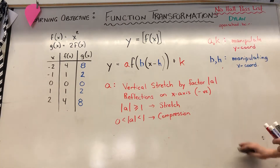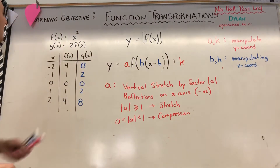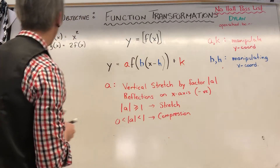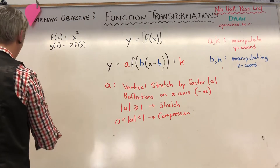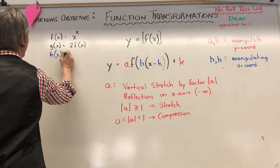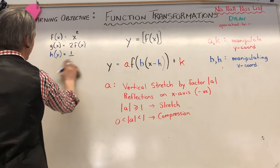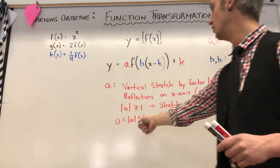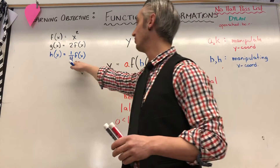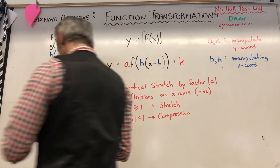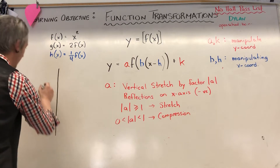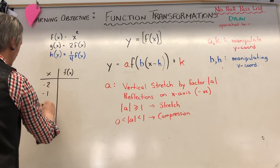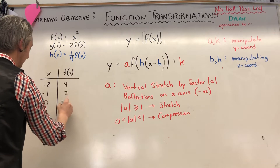Now let's do another example. I'm going to have a new function h(x) = (1/4)f(x). Now a is a fraction between 0 and 1, so I know I'm going to be compressing by a factor of 1/4. Let's draw the original function table again: x is −2, −1, 0, 1, 2 and f(x) gives 4, 1, 0, 1, 4. Wait — for f(x) = x², f(x) is: 4, 1, 0, 1, 4.